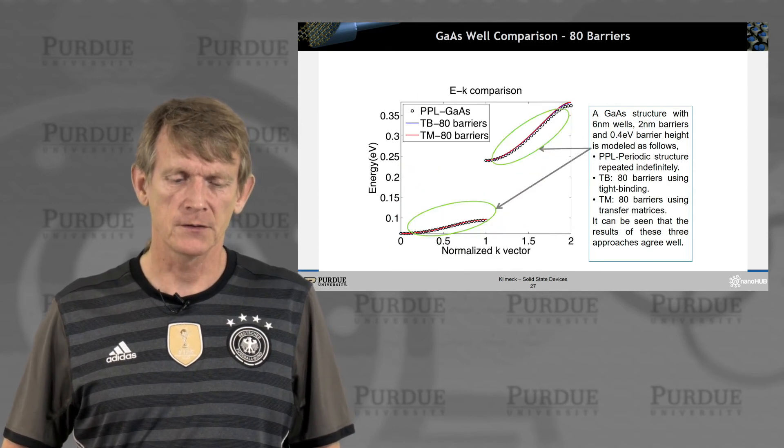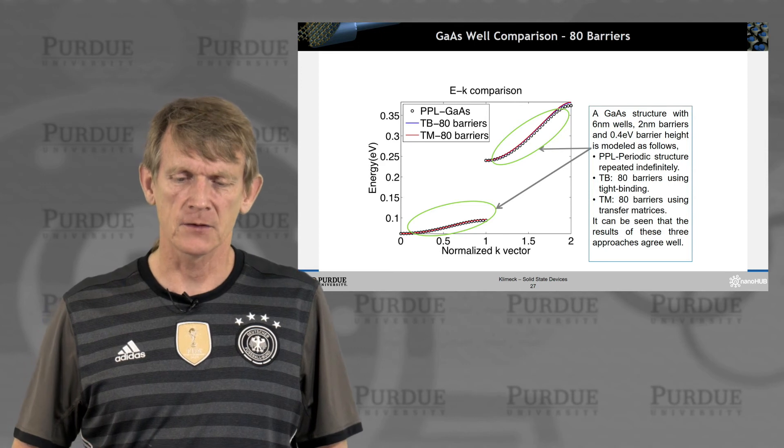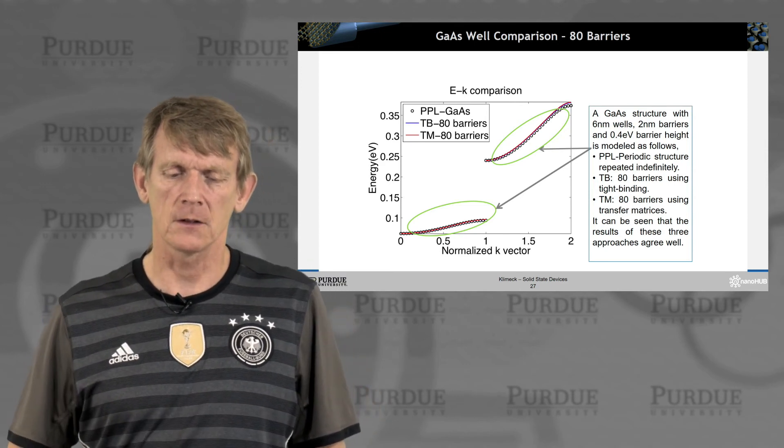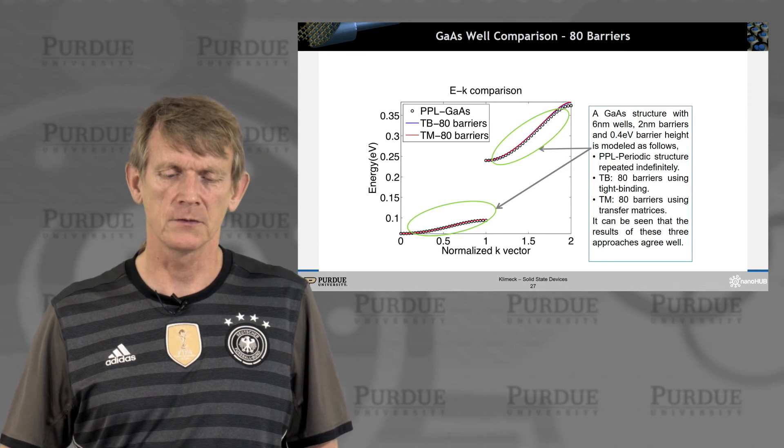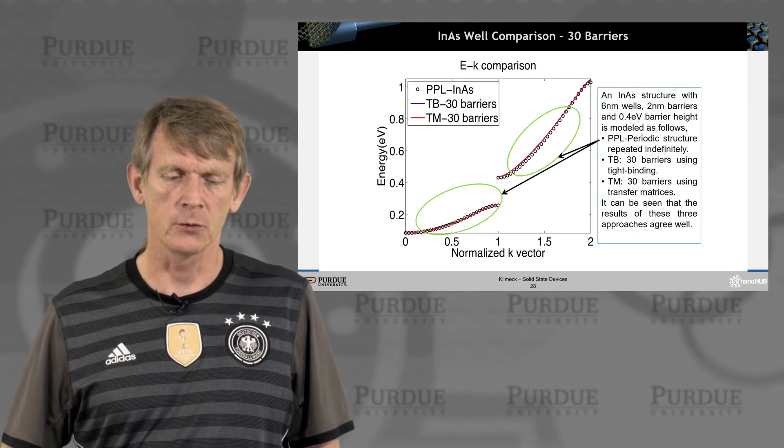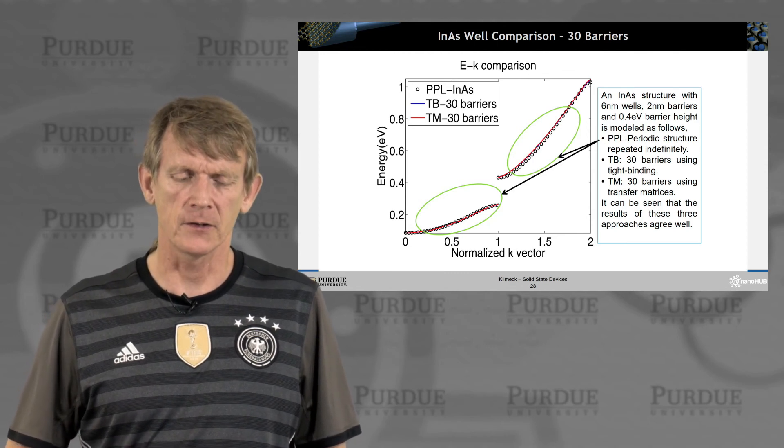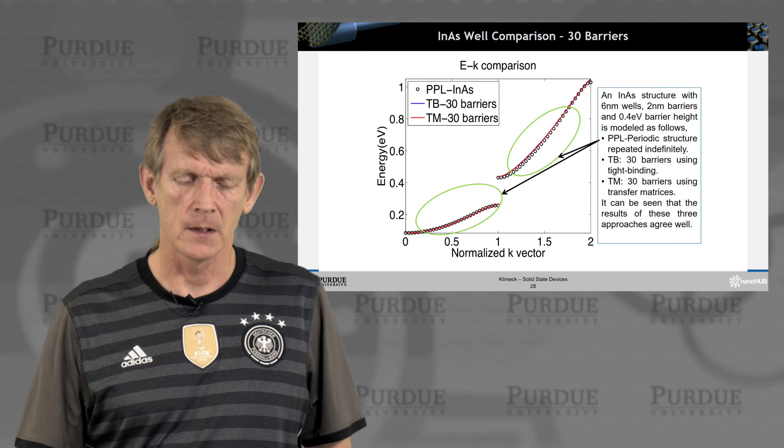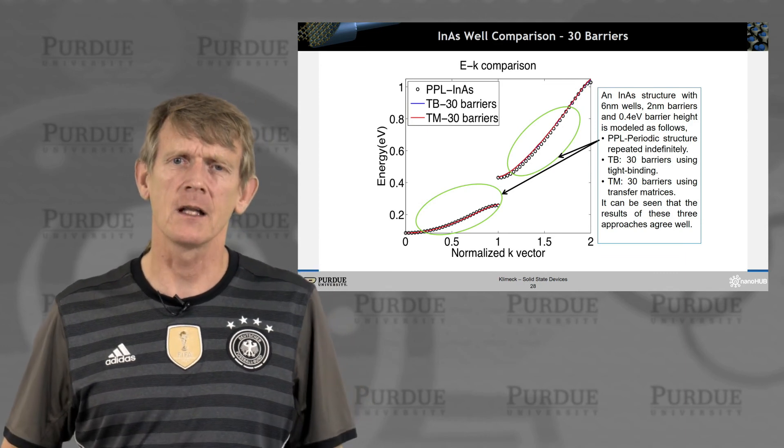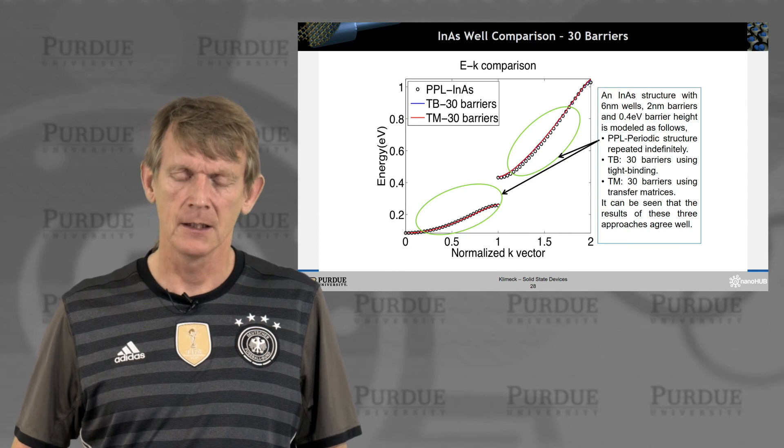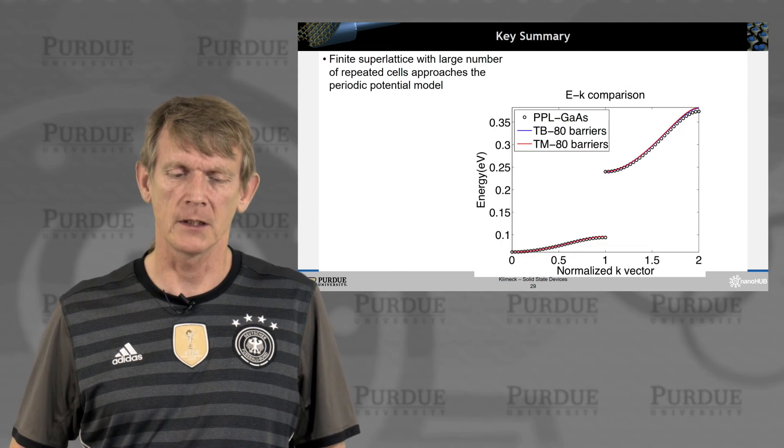Now, if we do these bands with a slightly different structure with 80 barriers, all you do is you fill in more dots onto this quasi-continuous line. And if you do indium arsenide, it's a lighter effective mass. The bands are slightly different in their shape. Indium arsenide is a lighter effective mass, so the bands are spanning broader, but the essential result remains the same.